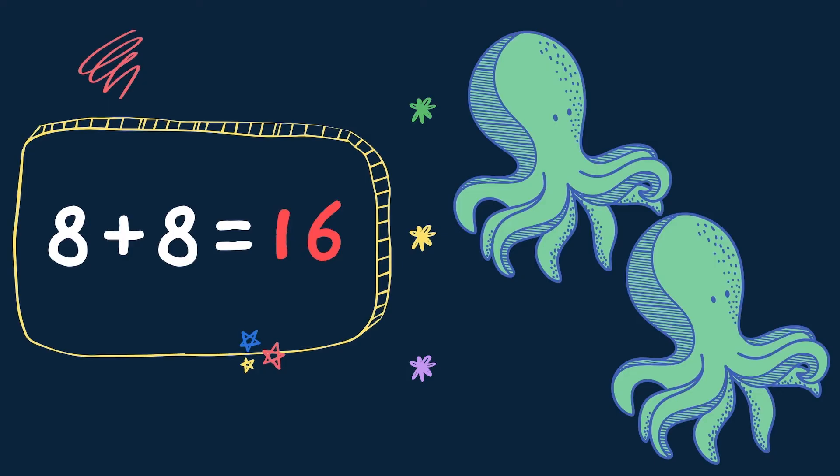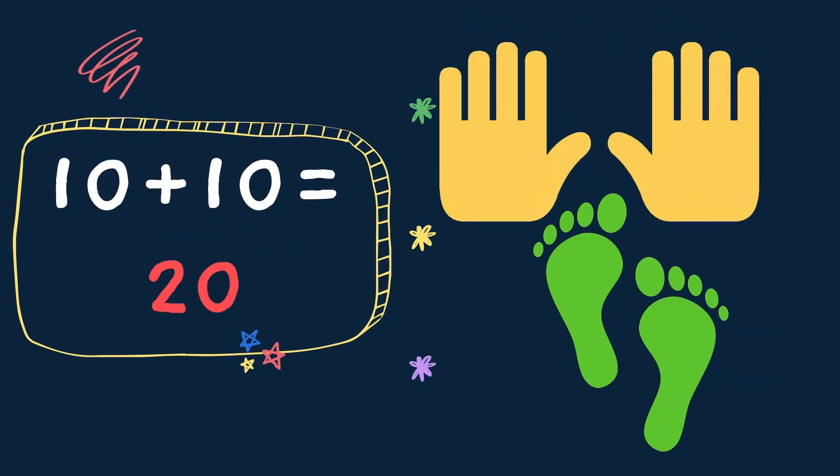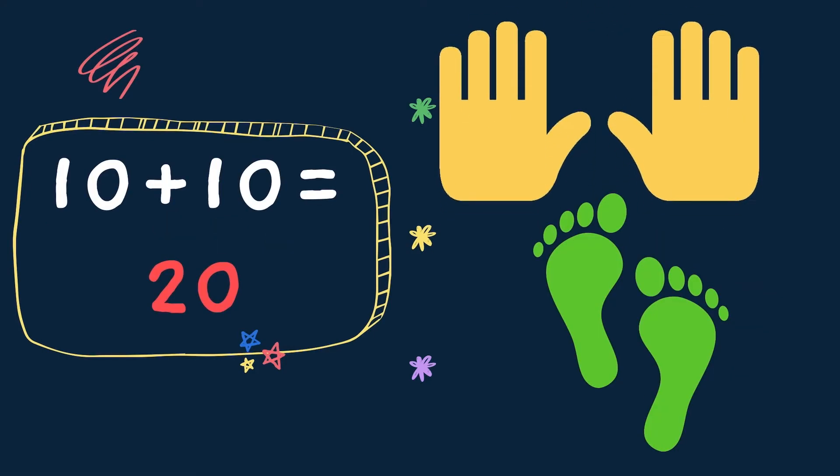8 plus 8 equals 16. 8 legs of 1 octopus. 9 plus 9 equals 18. And 10 plus 10 equals 20.